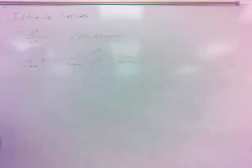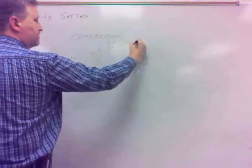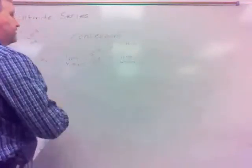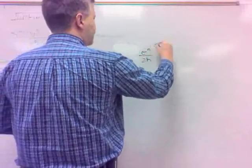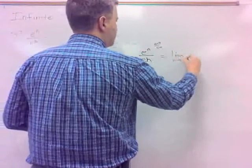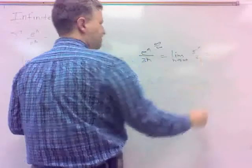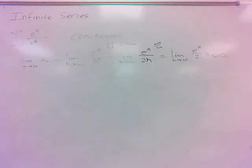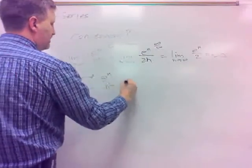What are you going to do on that one? It's infinity over infinity. Do l'Hôpital. We get e to the n over 2n — still infinity over infinity — so l'Hôpital again, we get e to the n over 2. What's that limit? Infinity over 2, which is infinity. Not zero, not convergent. So e to the n over n squared diverges.